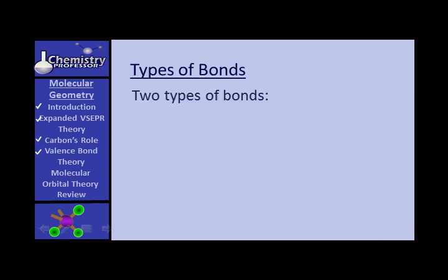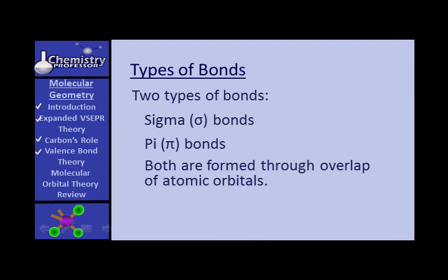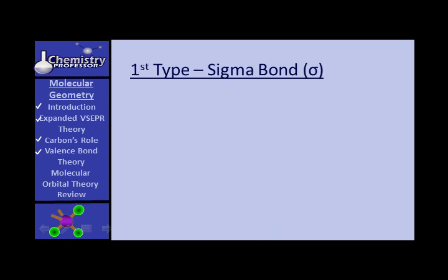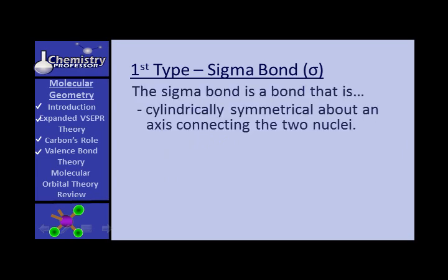Now we're going to look at two different types of bonds: sigma bonds and pi bonds. Both are formed through overlap of atomic orbitals. The sigma bond is a bond that is cylindrically symmetrical about an axis connecting the two nuclei.